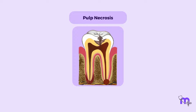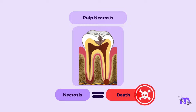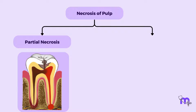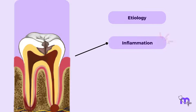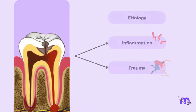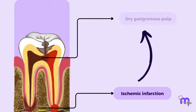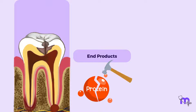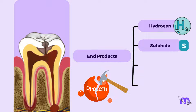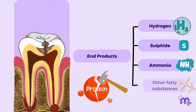Lastly, let's discuss necrosis of the pulp, which literally means death. Necrosis of the pulp can be partial or total and can occur as a result of inflammation or trauma. An ischemic infarction leads to a dry gangrenous necrotic pulp. When pulp decomposition occurs, the end products are those of protein decomposition — hydrogen sulfide, ammonia, and other fatty substances.